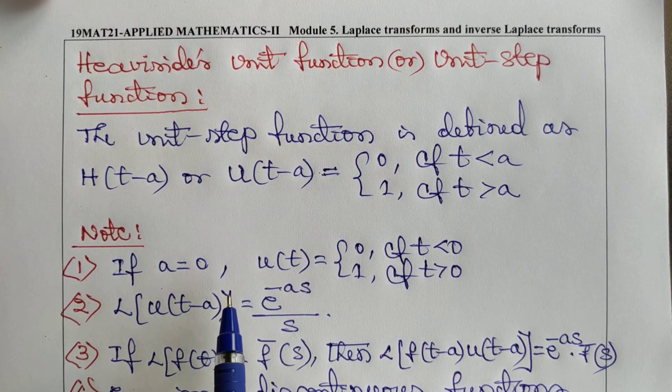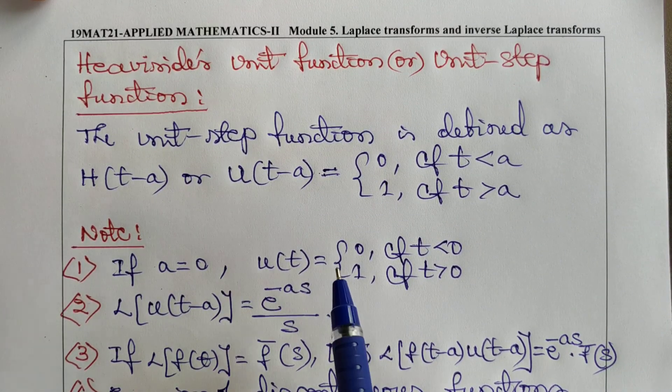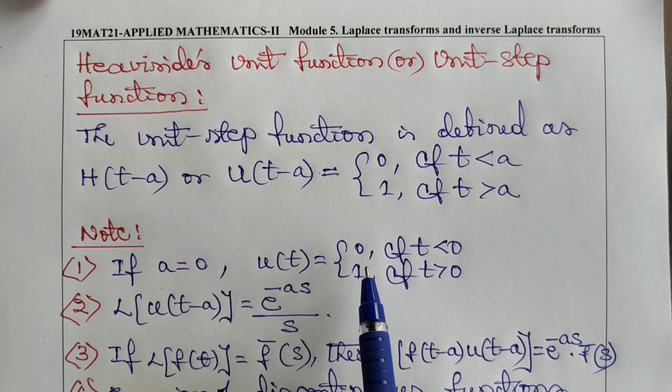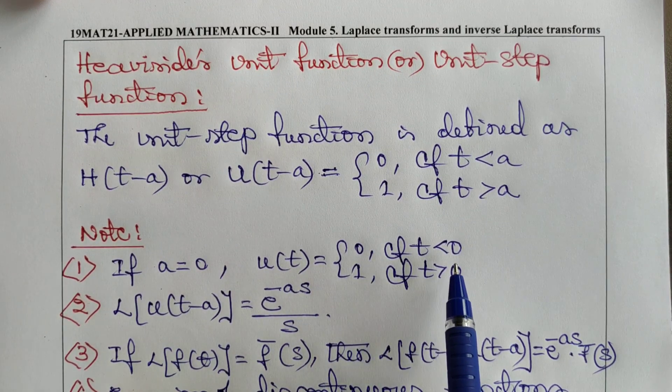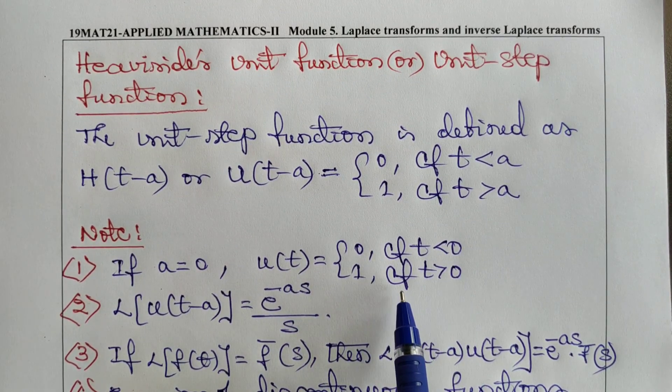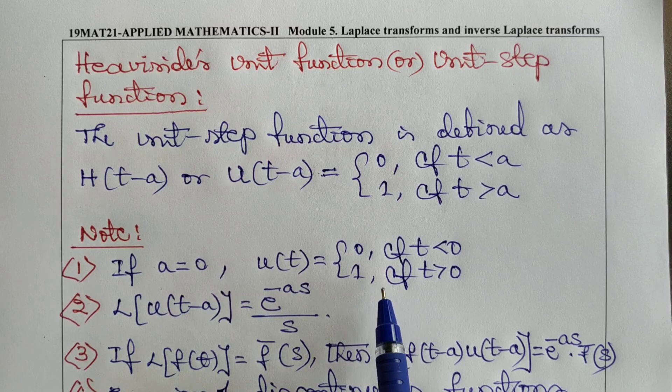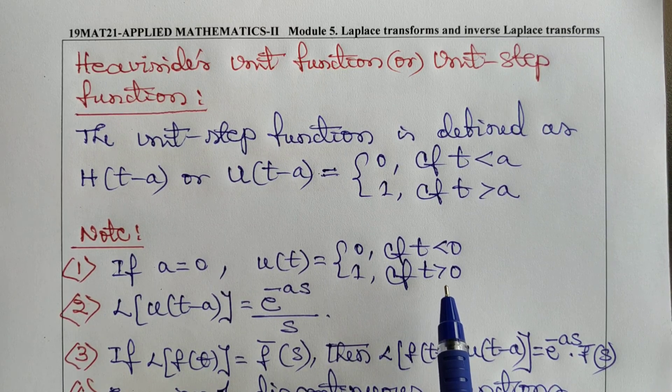Note 1: If a = 0, then u(t - a) becomes u(t), which equals 0 if t < 0, and 1 if t > 0.